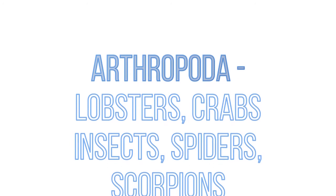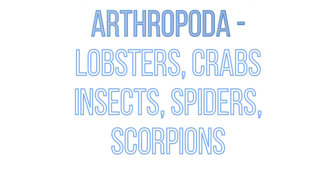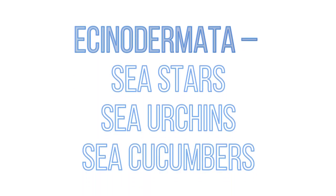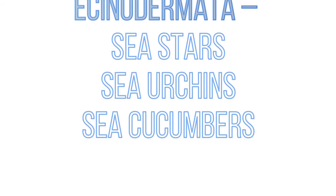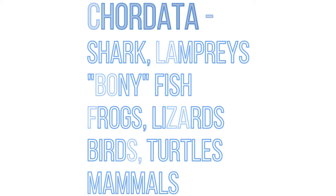Then we have Arthropoda — lobsters, crabs, insects, spiders, scorpions, and lots of things with little creepy-crawly legs. Then Echinodermata: sea stars, sea urchins, and sea cucumbers. And last but certainly not least — and probably the most diverse — is Chordata: sharks and lampreys, bony fish, frogs, lizards, birds, turtles, and mammals as well.